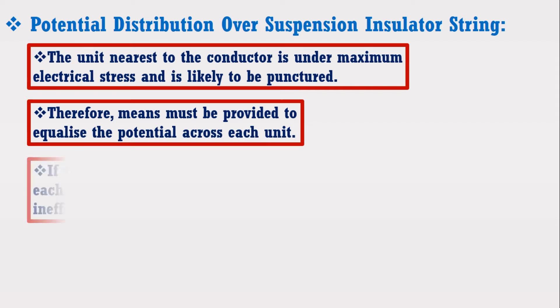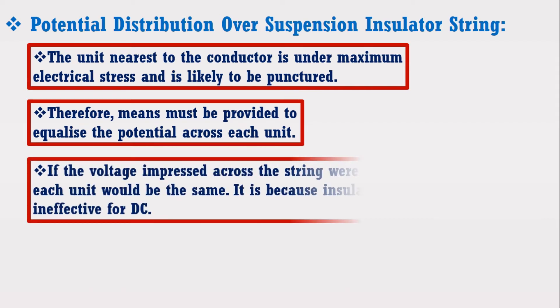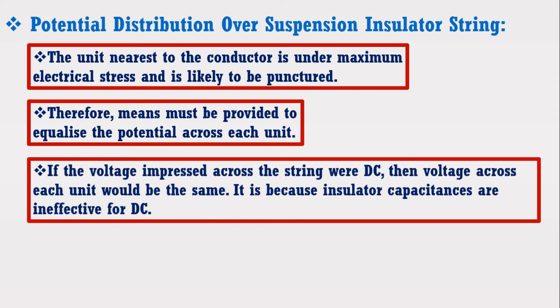However, it may be noted that if the voltage impressed across the string were DC, then the voltage across each unit would be the same. It is because insulator capacitances are ineffective for DC.